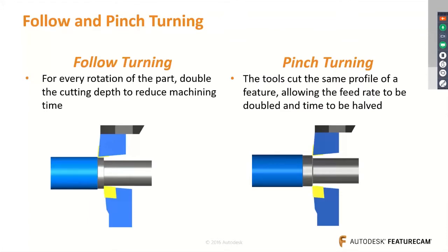Follow turning and pinch turning are widely used for balance turning. Using this functionality, you can do balanced roughing and finishing operations using multi-turrets — if you have an upper turret and a lower turret, you can perform these operations in FeatureCAM very efficiently.